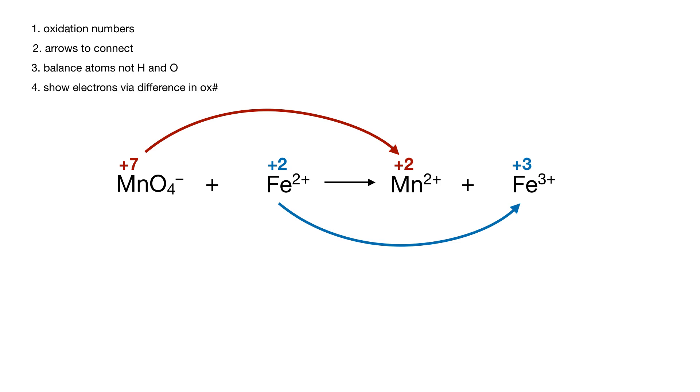Next step, take the difference in the two numbers and write that as the number of electrons. So permanganate going to manganese ion, that's a difference of 5 electrons, and you need to gain them to drop from plus 7 down to plus 2. Iron is actually losing one electron to go from plus 2 up to plus 3.